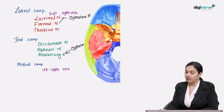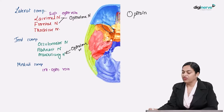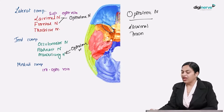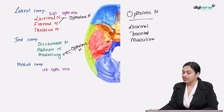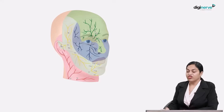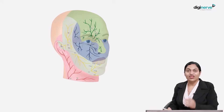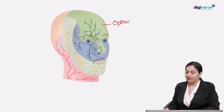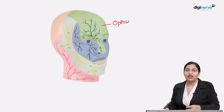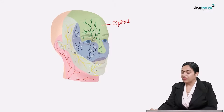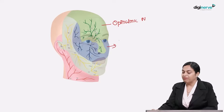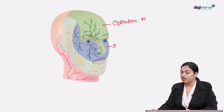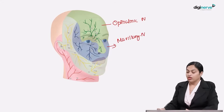The nasociliary nerve is also a branch of the ophthalmic nerve. The three branches of the ophthalmic division of the trigeminal nerve are: lacrimal, frontal, and nasociliary. The three divisions of the trigeminal nerve innervate the face except over the angle of the mandible. The ophthalmic division covers the upper face including scalp, forehead, upper eyelid, and bridge of the nose. The maxillary division covers the mid-face — upper lip, upper cheek, and lower eyelid. The mandibular division covers the lower lip and chin.